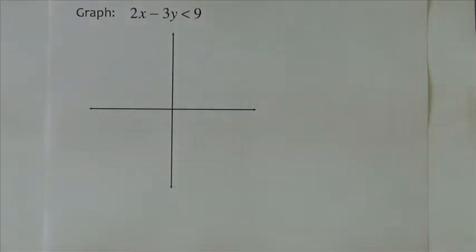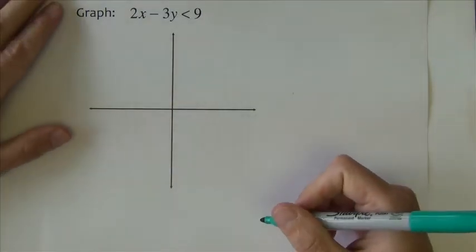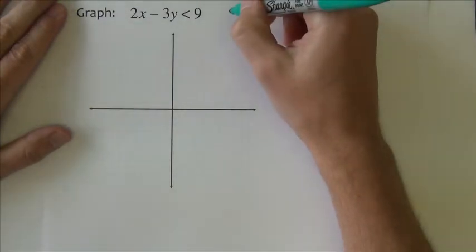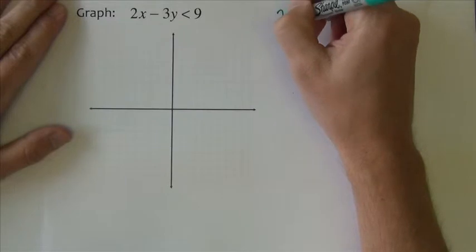Last example, and this is about as hard as I can make this type of problem. 2x minus 3y is less than 9. This is only slightly more challenging than the others because we have to solve it for y first. So solving this for y, let's just rework it over here.